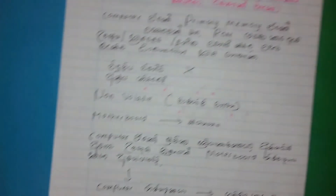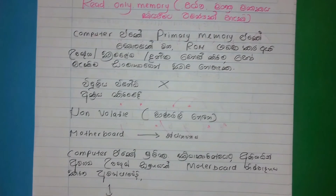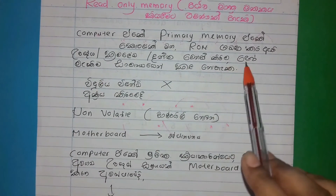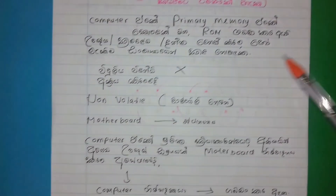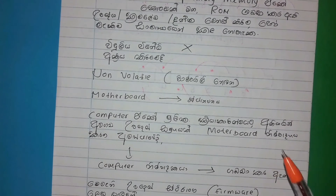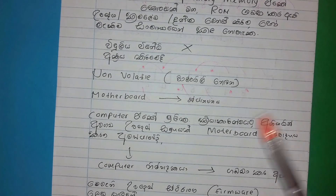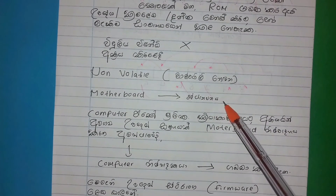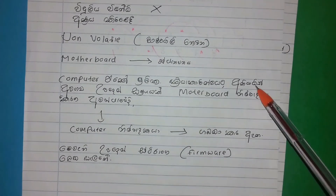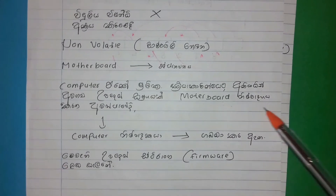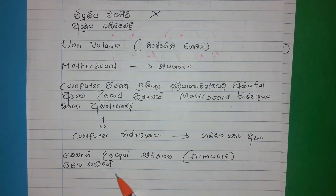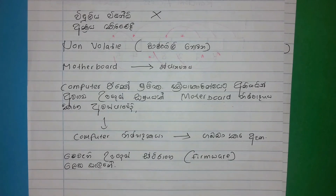Read only memory. We can use other devices to interface with other devices. This is the firmware list. This is the RAM.